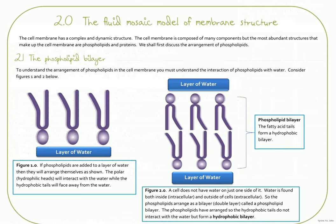The first thing to look at is the fluid mosaic model of membrane structure. This model describes how the cell membrane is arranged and organized — what it's made up of and how those components are arranged. The model was proposed by two scientists: Singer and Nicholson, based on their experimental work.